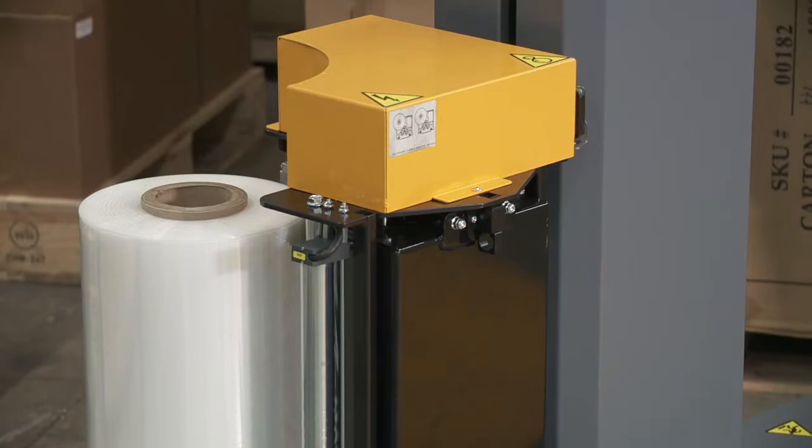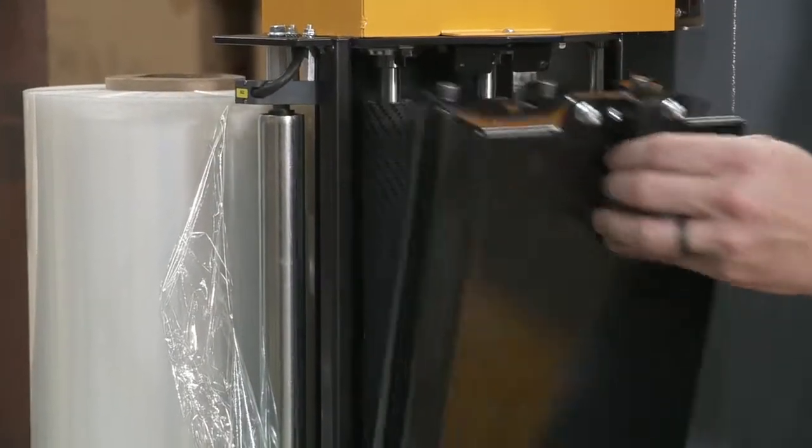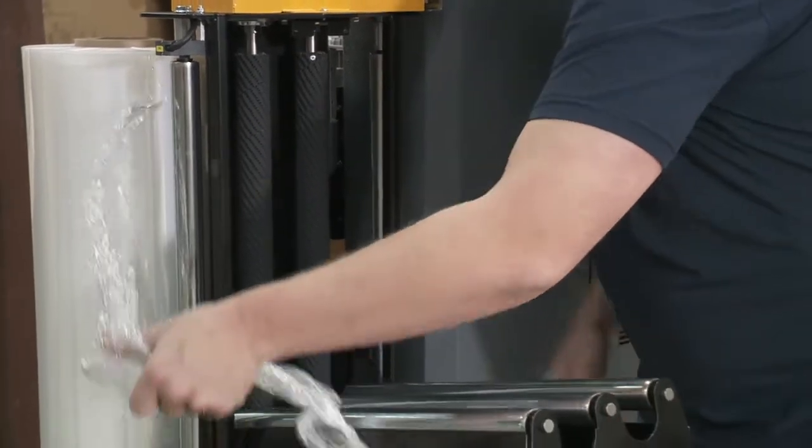Raise the carriage up manually to a convenient height. If the film is not routed properly, the machine will not feed it out when pulled.